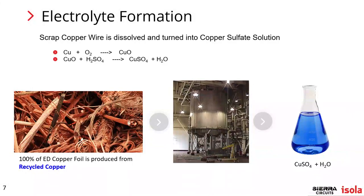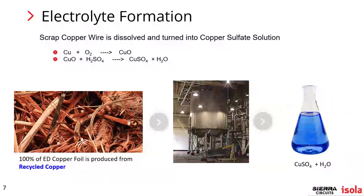These are generic chemical equations to show what's going on in the electrolyte formation process — they're basically taking raw copper and converting it into a copper sulfate solution. There's a picture of one of the dissolving tanks that they use, and they end up with the plating solution used to plate the copper foil. As you can see in the corner, this is recycled copper foil being used as the input material.